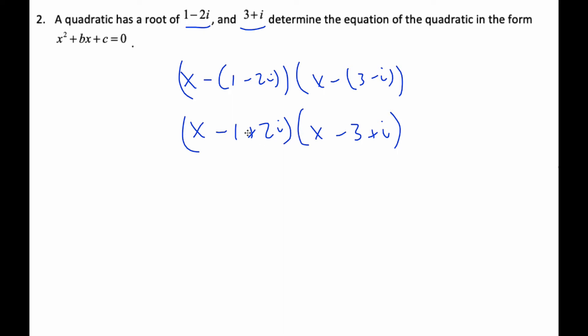I'm going to multiply all the terms out. So I get x squared, then x times the next term I get minus 3x, and then plus xi, and then I go to the next term.